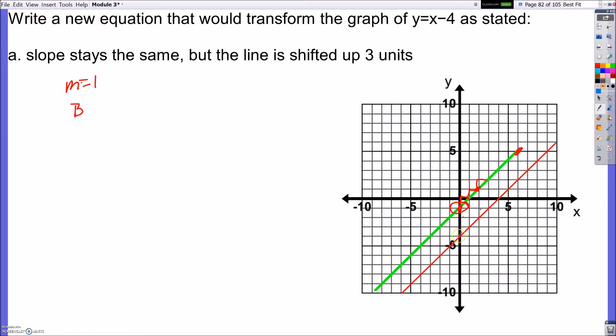That's where the movement happens. My b-value changed. So instead of it being negative 4, it got moved up 1, 2, 3 to negative 1. Therefore, the equation of the line is y equals x minus 1.